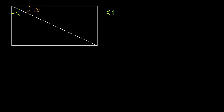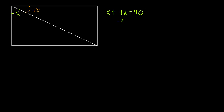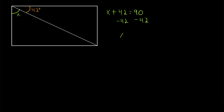In other words, we have that x plus 42 degrees has to total up to 90 degrees, since this whole angle has a measure of 90 degrees. Since they have to add to 90 degrees, we can subtract 42 from both sides in order to solve for x. On the left side, the 42 will cancel out with the minus 42, and we'll be left with x. On the right side, 90 minus 42 is 48. So x equals 48 degrees.